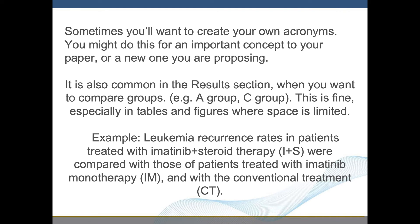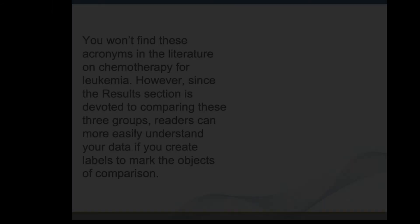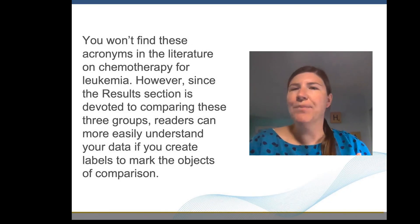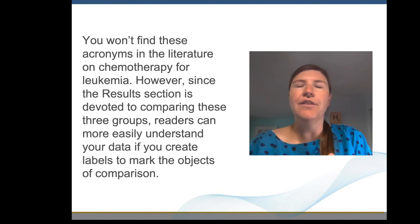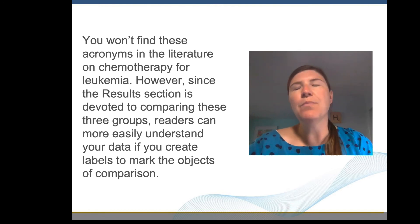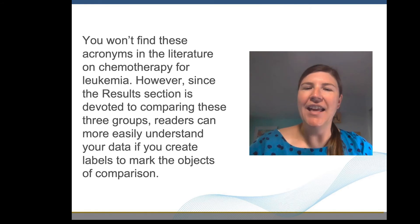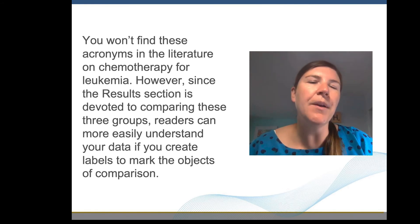Leukemia reoccurrence rates in patients treated with imatinib plus steroid therapy (I+S) were compared with those of patients treated with anatinib monotherapy (IM) and with the conventional treatment (CT). You won't find these acronyms in the literature on chemotherapy for leukemia. However, since the results section is devoted to comparing these three groups, readers can more easily understand your data if you create labels to mark the objects of comparison.